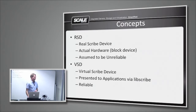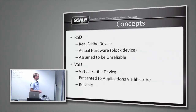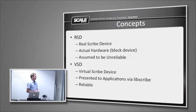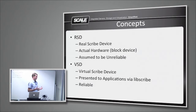I want to talk about some concepts you're going to hear a lot: RSDs and VSDs. An RSD is a Real Scribe Device — a real storage device. These are essentially the disks attached to our nodes. Scribe can actually use any block device for this; it can even use files, which we only use for testing. We obviously assume that is an unreliable device. The VSD is the Virtual Storage Device — this is what we're presenting to a VM as a block device. It is reliable; we implement that reliability through a VSD driver.